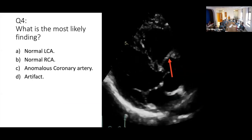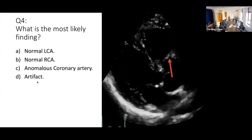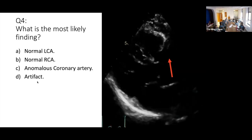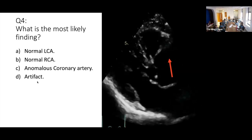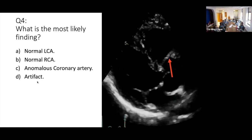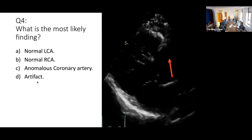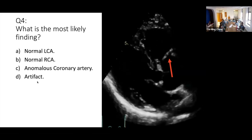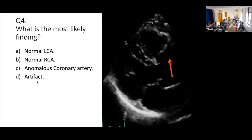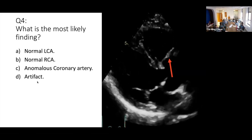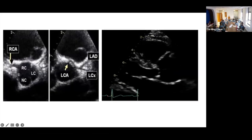What is this structure? What is the most likely finding? Is it left coronary artery, right coronary artery, anomalous coronary, or artifact? The majority said it is the right coronary artery, which is correct. You can see the coronary arteries by echo. It is more common in pediatrics where they assess the coronaries by echo to confirm normal coronaries, visualize the origin, and check for anomalies. You can see the RCA, the left main, and the bifurcation here.